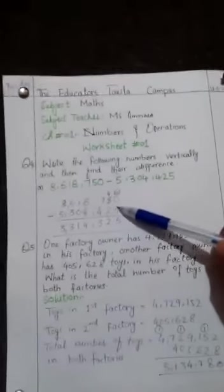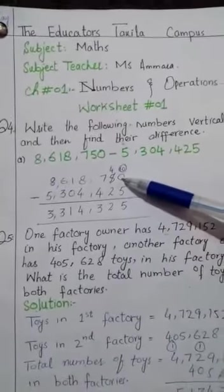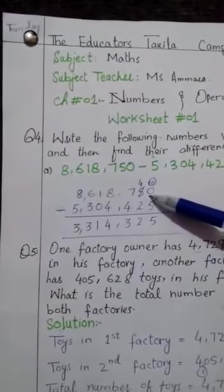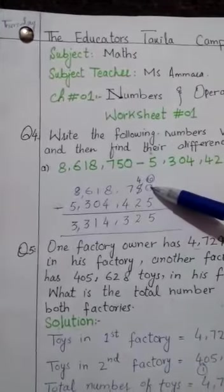values. 5 is greater than 0, so we can't subtract 5 from 0. We will borrow 1 from the next value. 0 becomes 10 here. 10 minus 5 gives us 5.